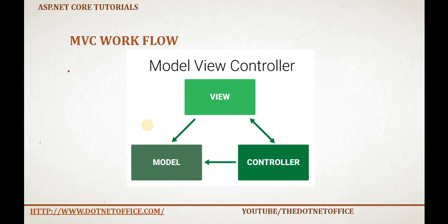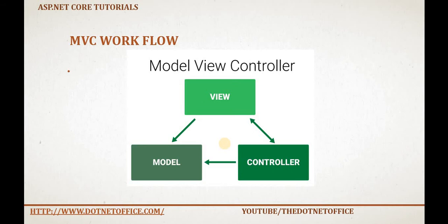Now let's understand how the MVC workflow works. In this diagram you can see boxes for the View, Model, and Controller. With arrows, we can see that the View can talk with the Controller and the Controller can talk with the View — so this is bi-directional. With the Model, only one direction exists. Between the View and the Model there is only one direction.